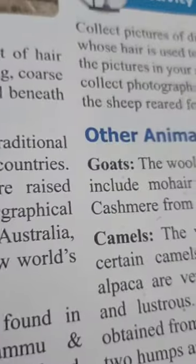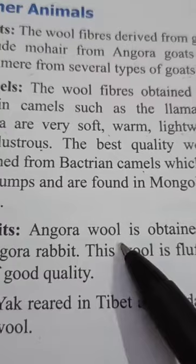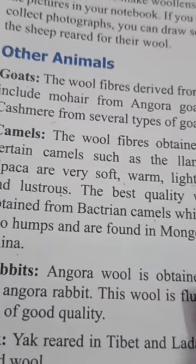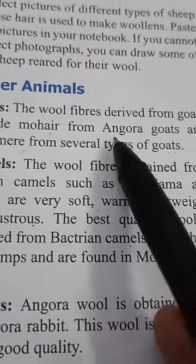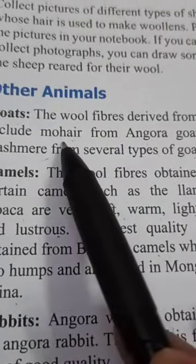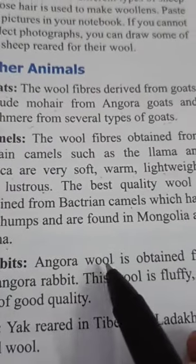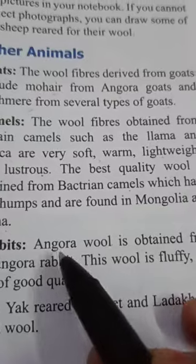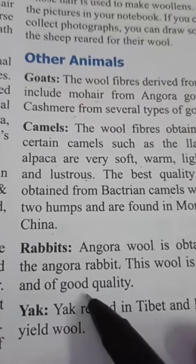The next animal is the rabbit. Angora wool is obtained from the Angora rabbit. Don't confuse this — we talked about mohair wool from the Angora goat earlier, but here Angora is a kind of wool obtained from the Angora rabbit. This wool is fluffy, soft and of good quality.